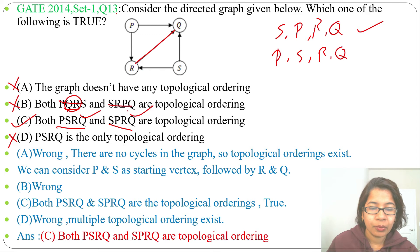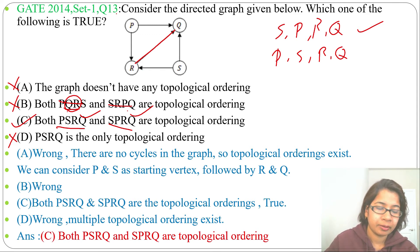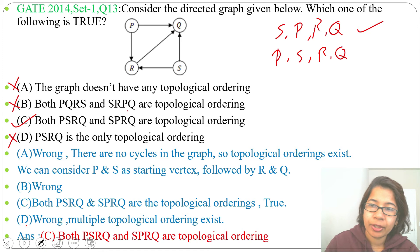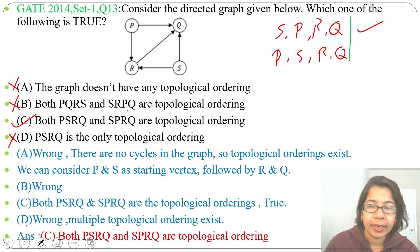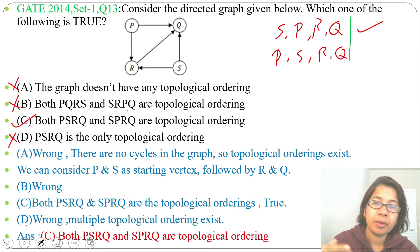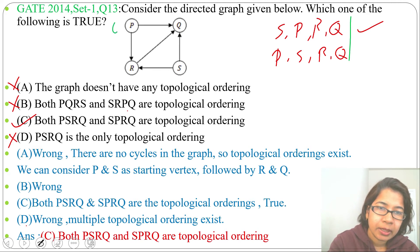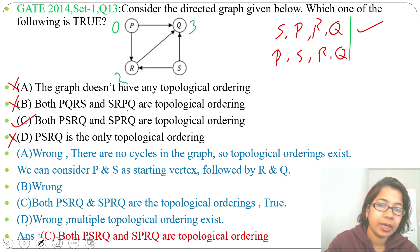The answer is option C: both PSRQ and SPRQ are topological orderings. Now let's verify using the source removal algorithm. The in-degree of P is 0, in-degree of R is 2, in-degree of Q is 3, in-degree of S is 0.